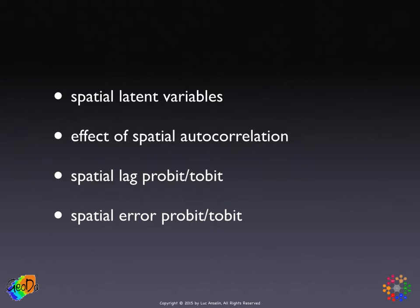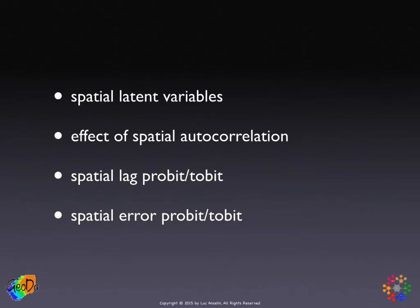Then we'll do something similar to what we have done for the linear regression model, namely assess the effect of spatial autocorrelation on the underlying latent variable and its probability of crossing the threshold. And then we'll look specifically at the spatial lag probit and Tobit, and the spatial error Tobit and probit.